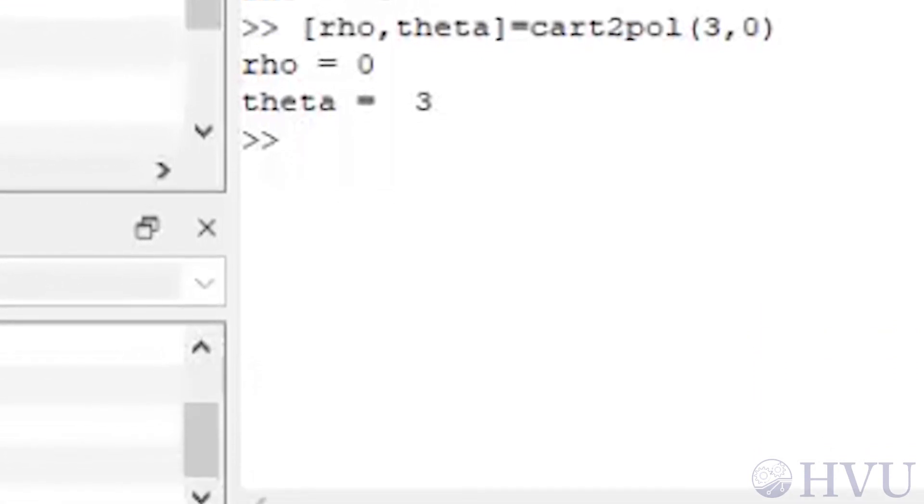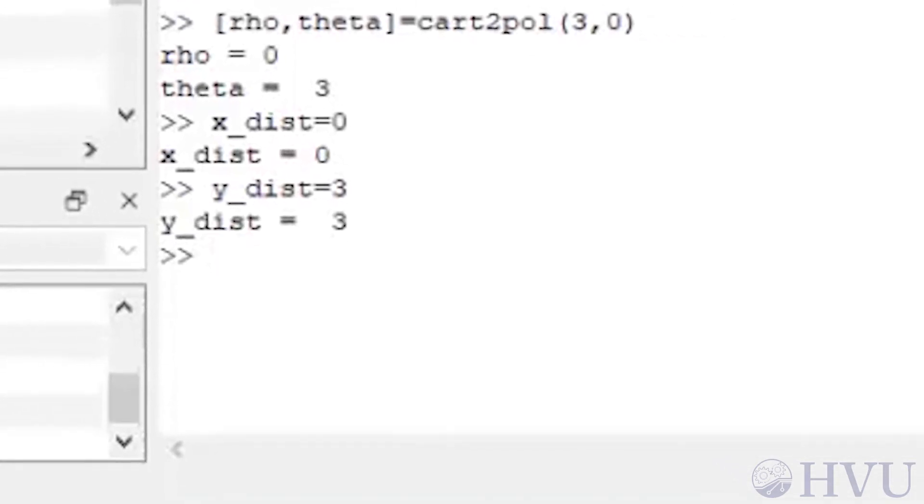This time, let's assign our values to variables and use variables in our input argument list. Let's set the x distance to zero by typing x_dist = 0 and the y distance by typing y_dist = 3. Now let's type [angle, rad_dist] = cart2pol(x_dist, y_dist) and follow our command with a semicolon. Now the calculation is done, but the semicolon suppresses display of the results.